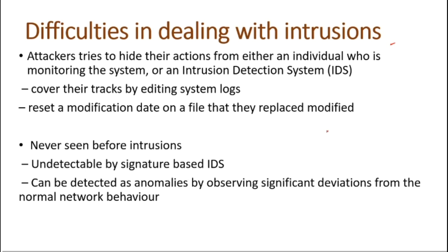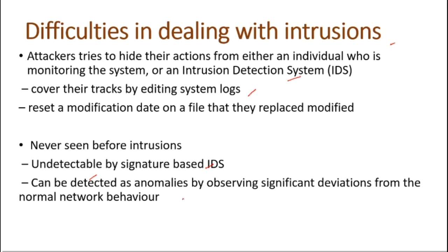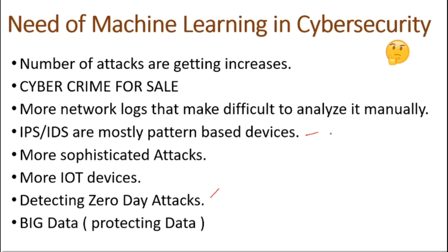What are the difficulties in dealing with intrusions? Attackers are hiding themselves from individuals monitoring the system and from the IDS by covering their tracks. If they've already entered a network, they edit system logs and reset modification dates on files so we cannot see when a file was changed. Signature-based IDS cannot detect these zero-day attacks. They can only be detected using machine learning anomaly detection methods such as statistical methods, expert systems, clustering, neural networks, deep learning, and support vector machines.